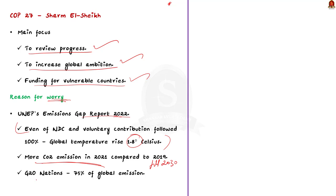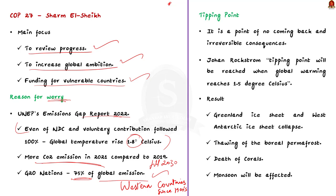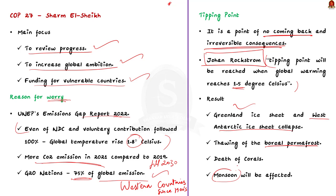The report also says G20 countries account for 75% of global emissions. The richest G20 nations — western countries emitting large quantities of CO2 since the 1900s — are responsible for accumulated emissions since the industrial revolution. The scientific community is also worried about the tipping point: a scenario that, once reached, results in irreversible consequences. Scientist Johan Rockström says the tipping point will be reached when global warming hits 1.5 degrees Celsius, causing collapse of the Greenland and West Antarctic ice sheets and thawing of boreal permafrost, impacting monsoons.